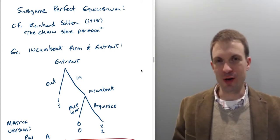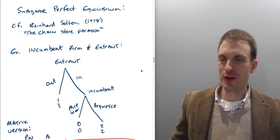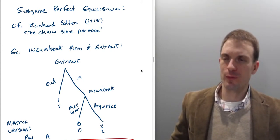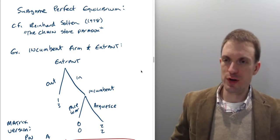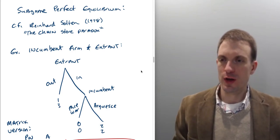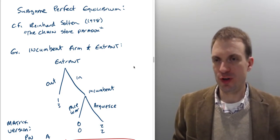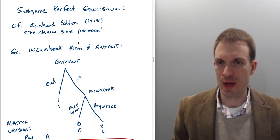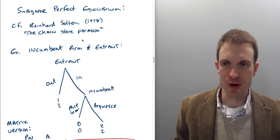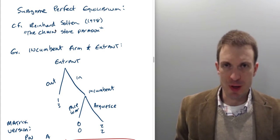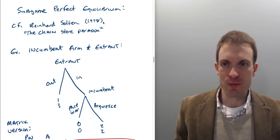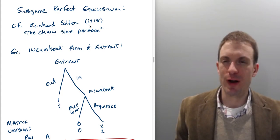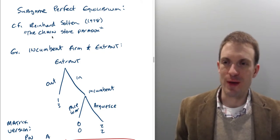Hello and welcome. This video is part one of a series replying to questions asking for videos on sub-game perfect equilibrium. Sub-game perfect equilibrium is a refinement of the Nash equilibrium, introduced by Reinhard Selten in the famous paper on the chain store paradox.